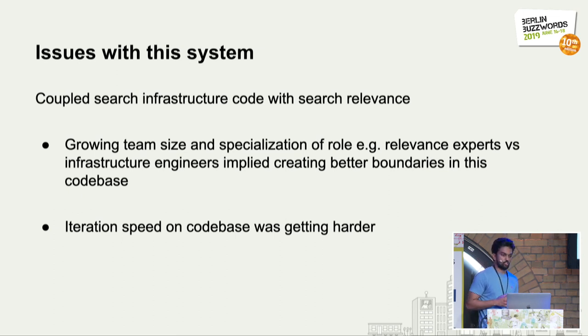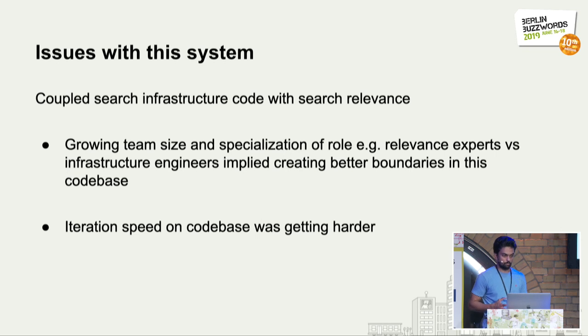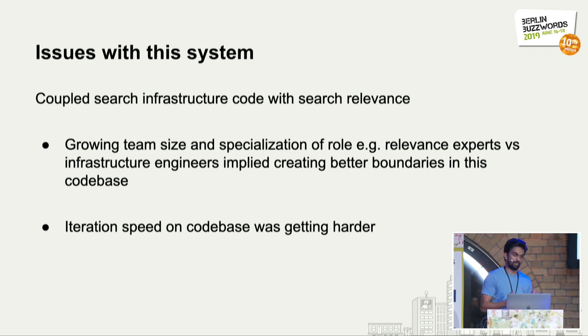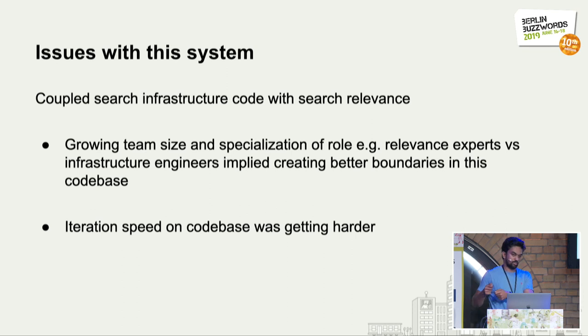What are the issues with this system? Initially it was a handful of engineers, but the team grew to a department of probably 30-plus people with specialized roles. The relevance experts wanted to improve result quality, while the infrastructure team's primary goal was availability, performance, and reliability. When the codebase isn't designed to handle these cross-cutting concerns separately, code becomes entangled. Making relevance changes risks breaking latency, and resharding logic risks breaking relevancy.